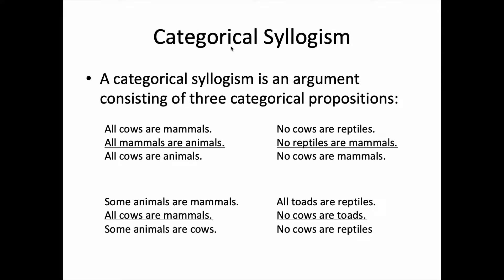Here are some examples. All cows are mammals. All mammals are animals. So all cows are mammals. Some animals are mammals. All cows are mammals. Some animals are cows.